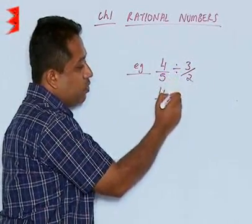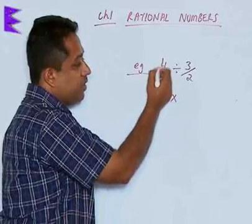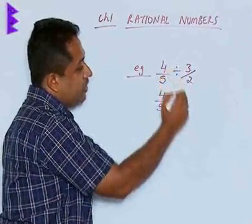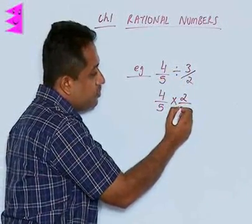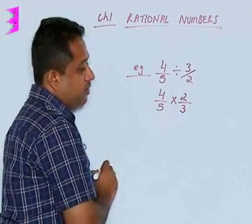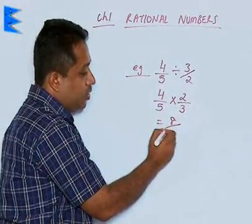We will take the reciprocal of the second number. The first number remains as it is and we are going to take the reciprocal of this. So this becomes 2 upon 3, and the answer is going to be 8 upon 15.